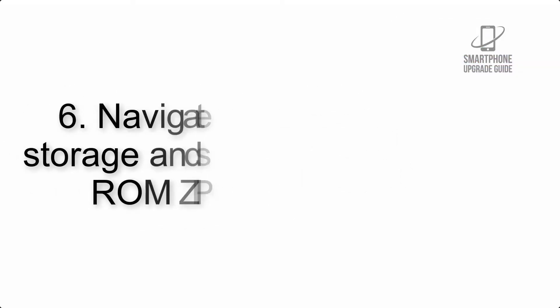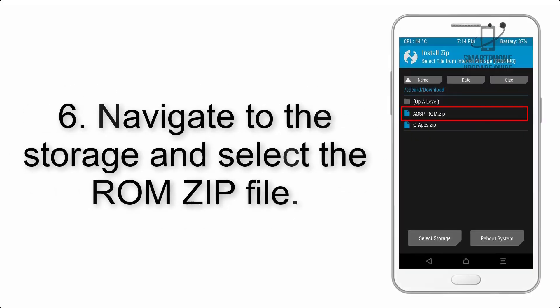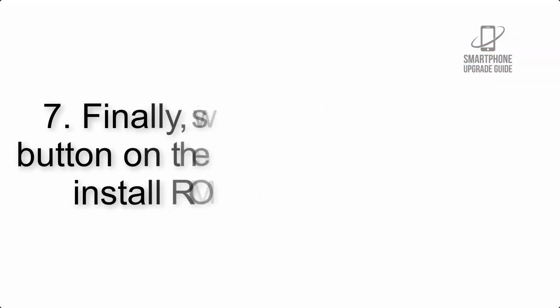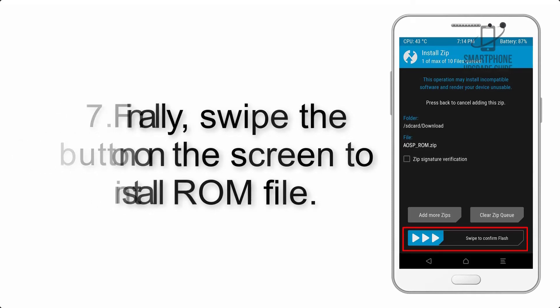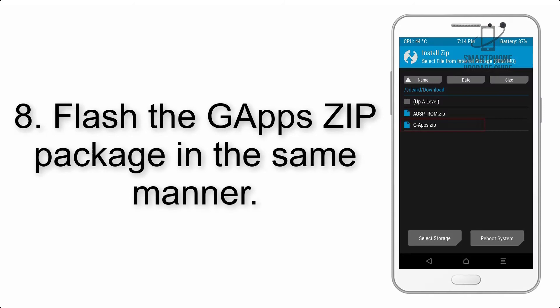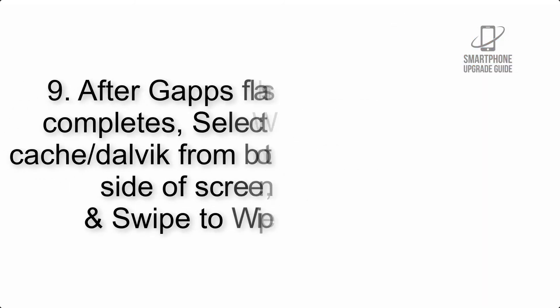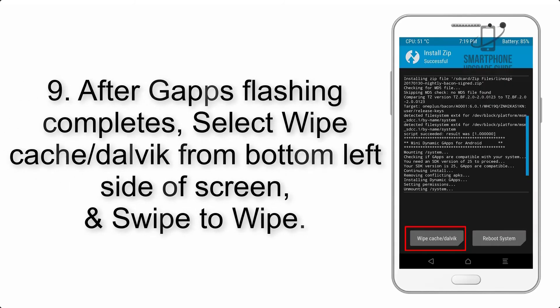Step 6: Navigate to the storage and select the ROM zip file. Step 7: Swipe the button on the screen to install the ROM file. Step 8: Flash the GApps zip package in the same manner.